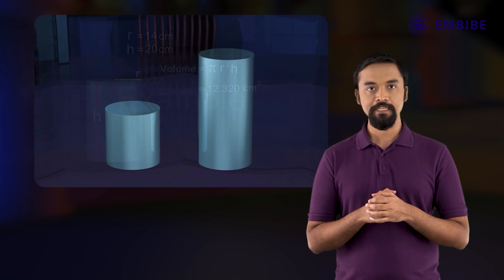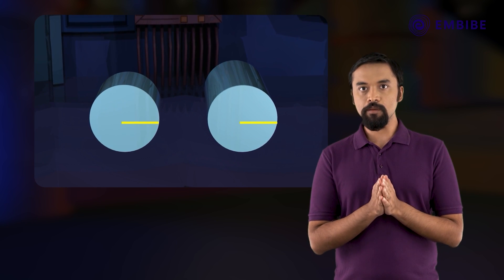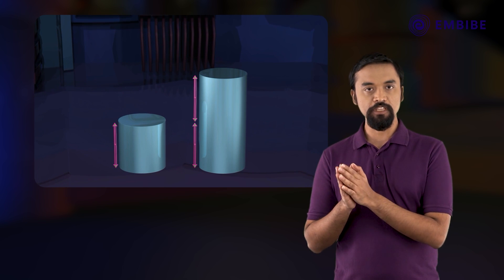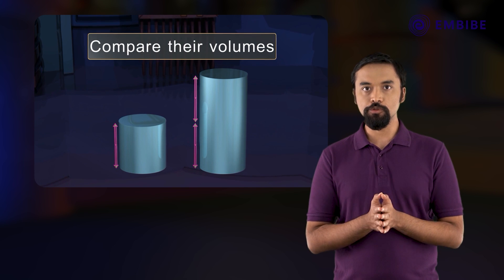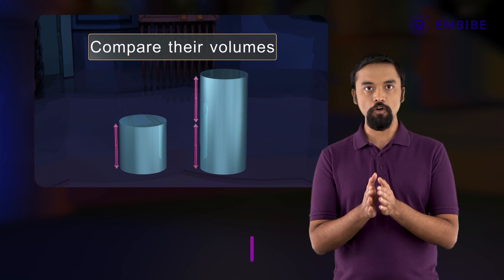Example two: cylinders have the same radii, but the height of one is twice that of the other. Compare their volumes - that is, find the ratio of their volumes.